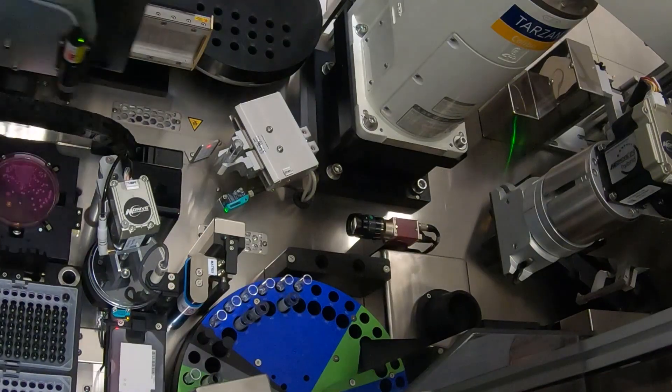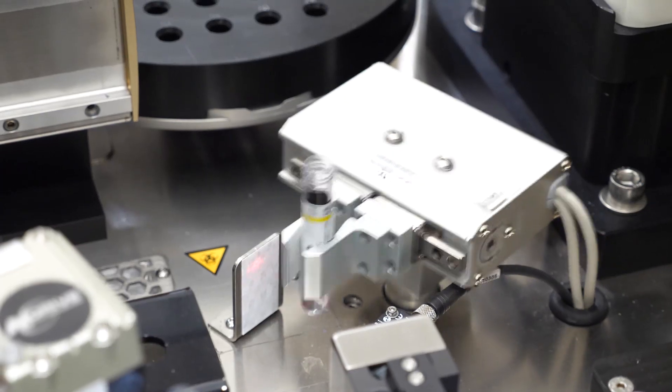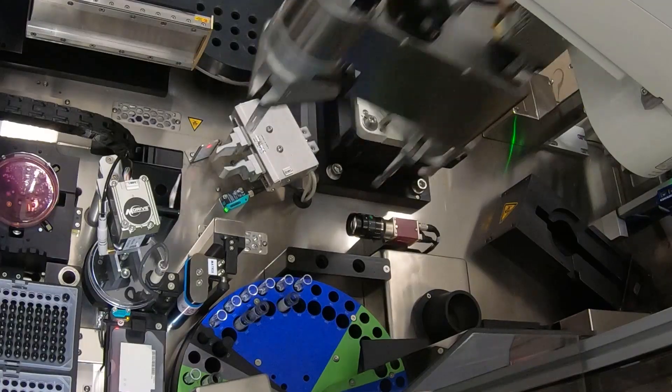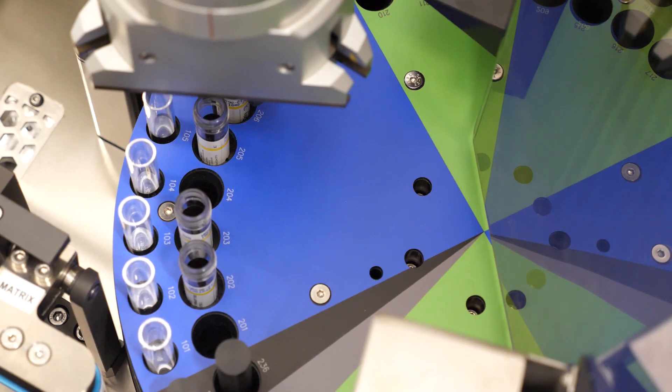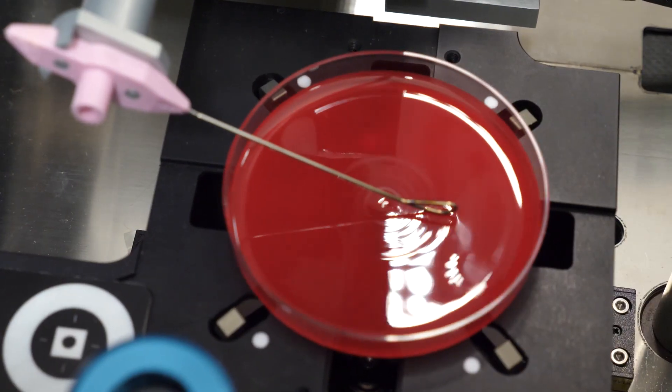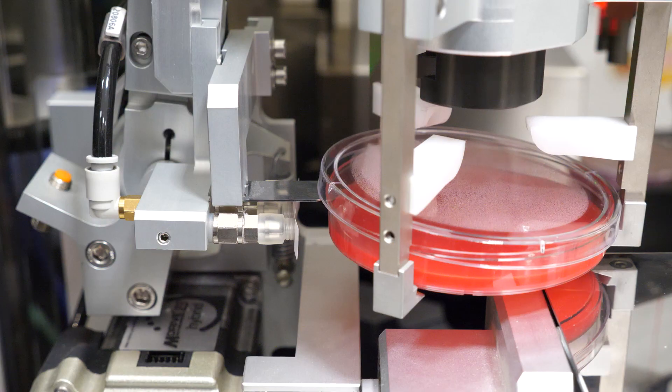For antibiotic susceptibility testing, colonies are seeded in a primary McFarland suspension tube and opacity is checked, and aliquot is transferred into the manufacturer's McFarland tube. A purity plate is prepared and all outputs are barcoded for traceability.